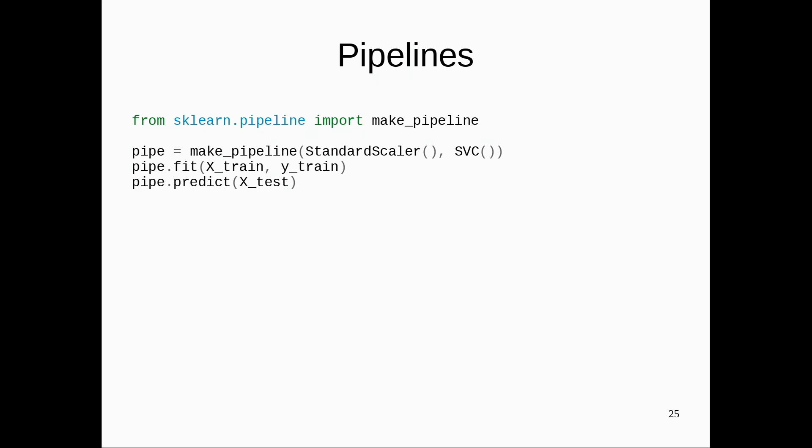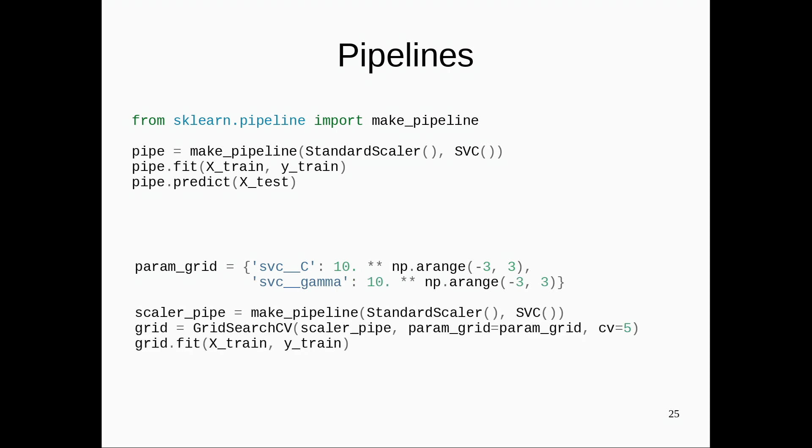So if I want to do grid search over this, I can just use this pipeline inside the GridSearchCV. The only thing I need to adjust is I need to tell GridSearchCV, which does the parameter search, which steps inside the pipeline I want to tune the parameters on. And so here, there's this notation with a double underscore, which basically says, on the step that's called SVC, tune the parameter C, on the step that's called SVC, tune the parameter gamma. And so this allows you to do grid search and cross-validation over these complex pipelines.